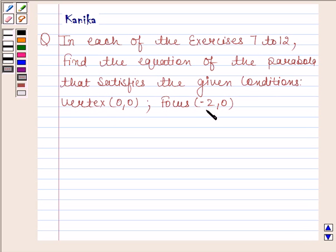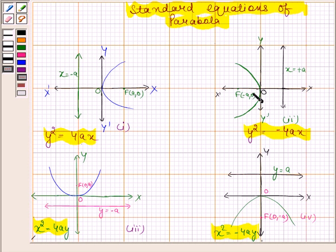Vertex (0,0), focus (-2,0). Before solving this question, we should know that if the parabola has vertex at the origin, focus at point (-a,0) and directrix x equals to plus a, then equation of parabola is of the form y² = -4ax. This is one of the standard equations of parabola.